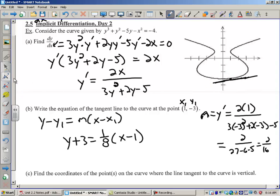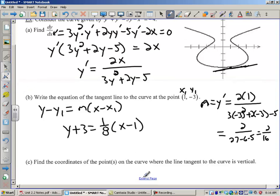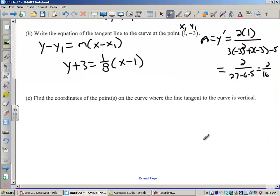So I can believe the slope of 1/8 as well, because that's rather flat. It's almost 0. The last one is find the coordinates of the points on the curve where the line tangent to the curve is vertical. If you have the line tangent to the curve, this means the derivative.